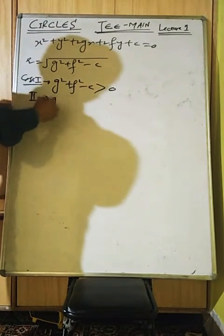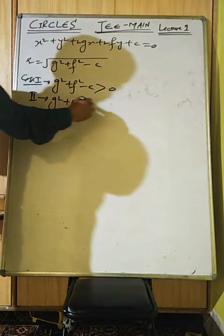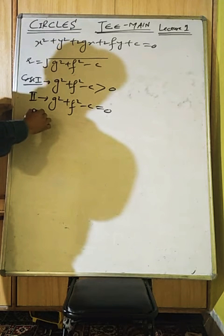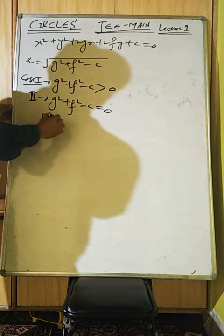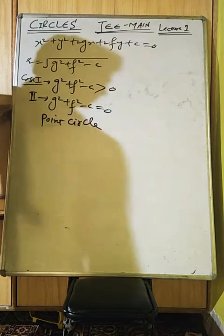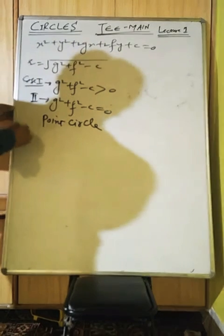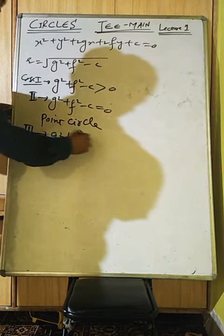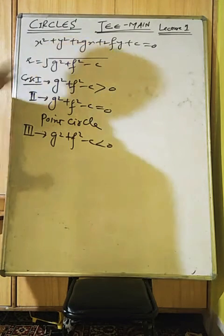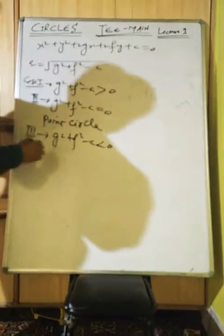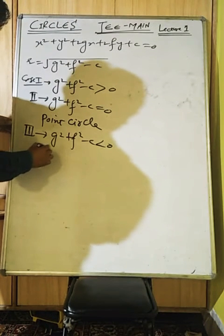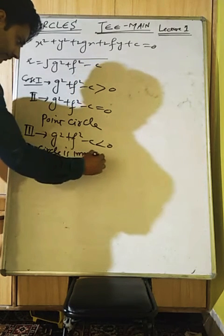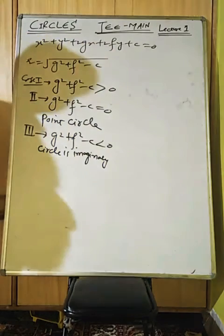If g² + f² − c = 0, then r = 0, and the circle reduces to a point circle as discussed earlier. If g² + f² − c < 0, it means we can't draw the circle — it is imaginary.